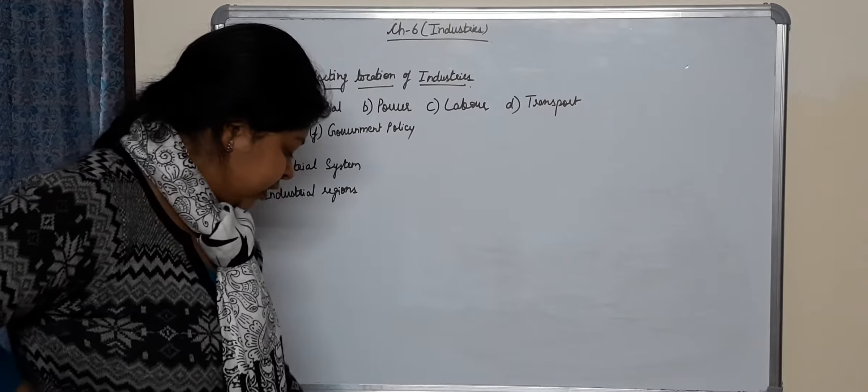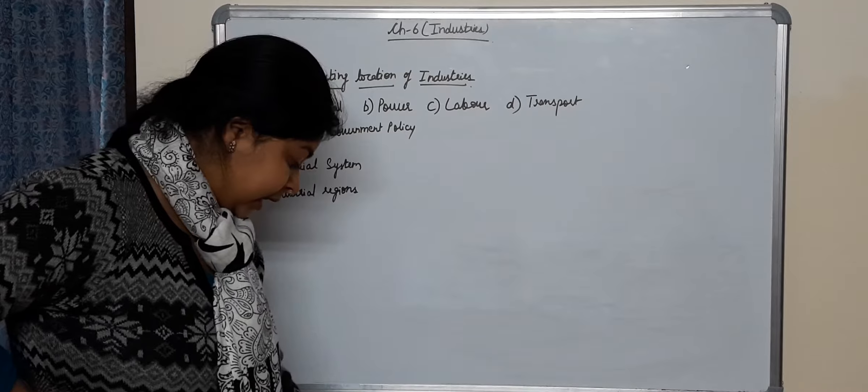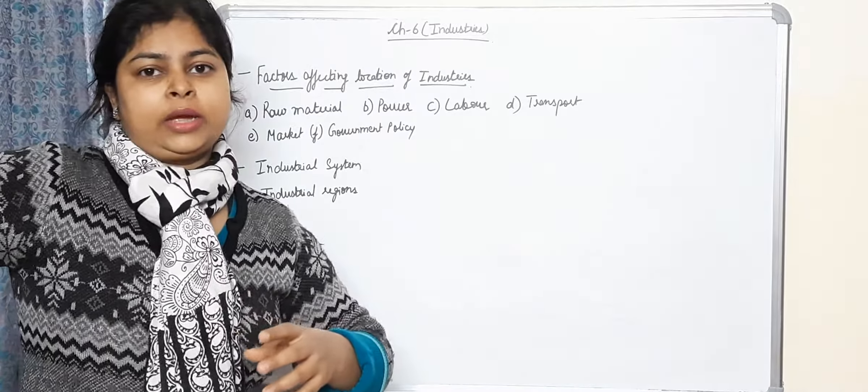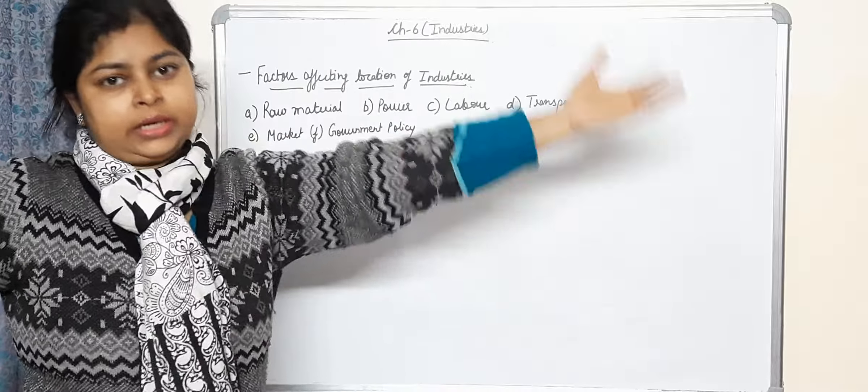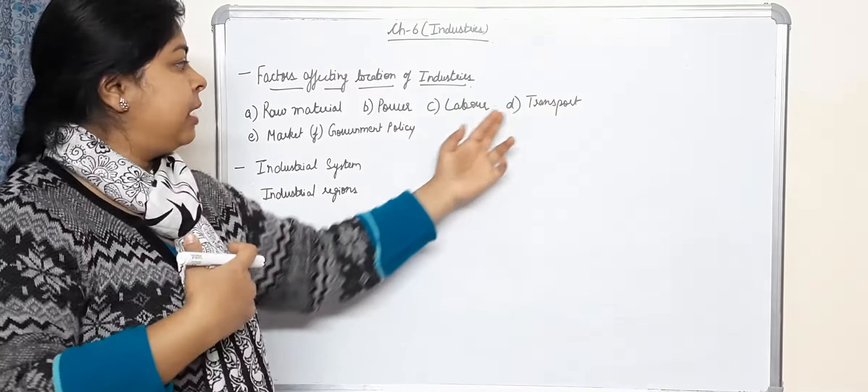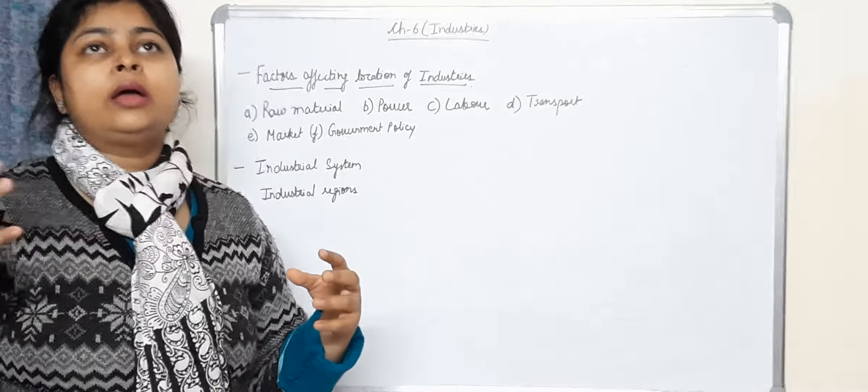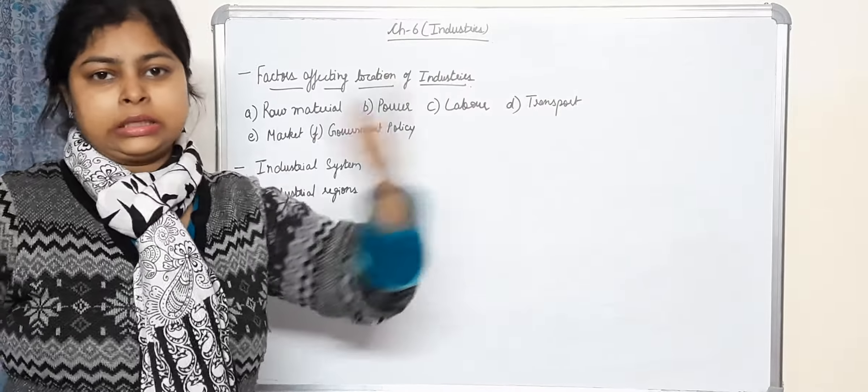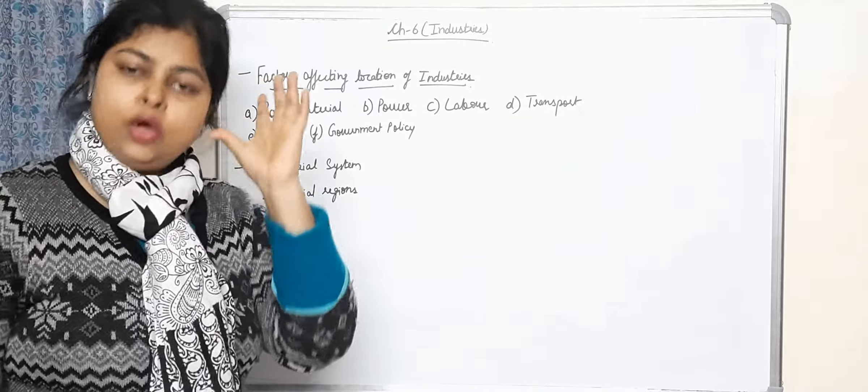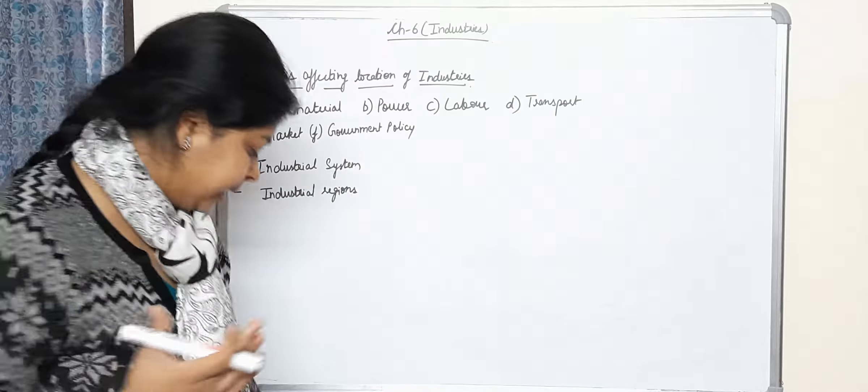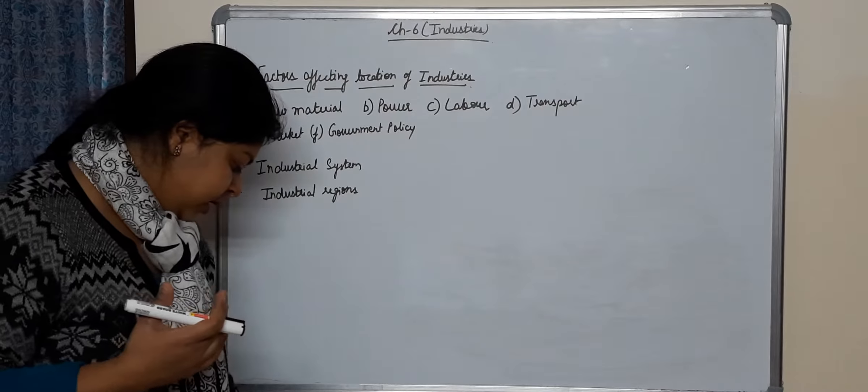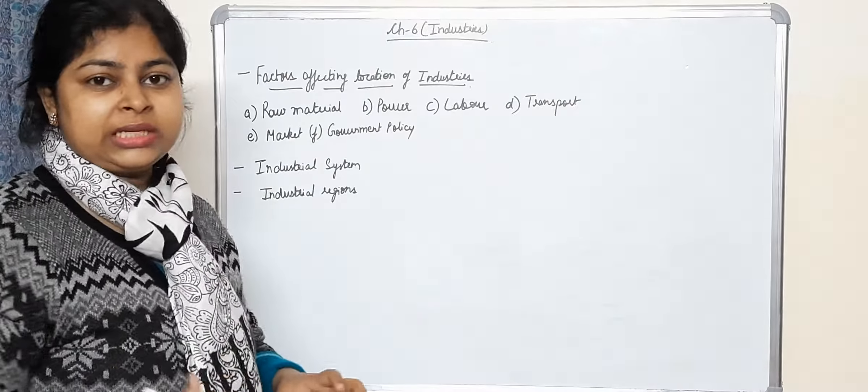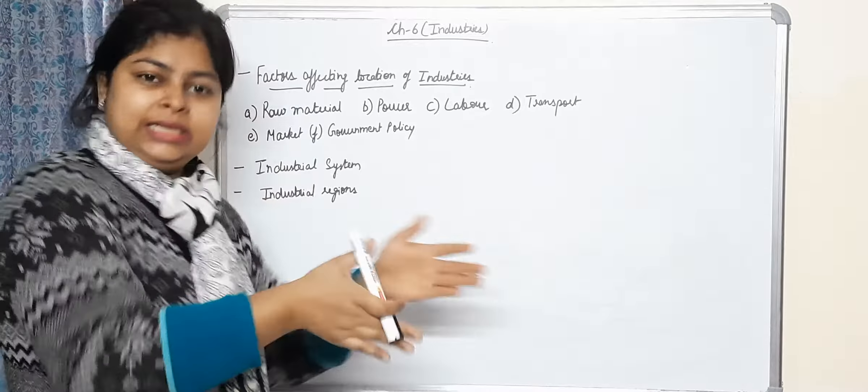Labor, availability of labor, transport, market. Proximity to market enables sales of goods. So we have to keep these things in our mind. Next we have government policy. Government offers certain regions and has marked some industries that can be established in specific locations.